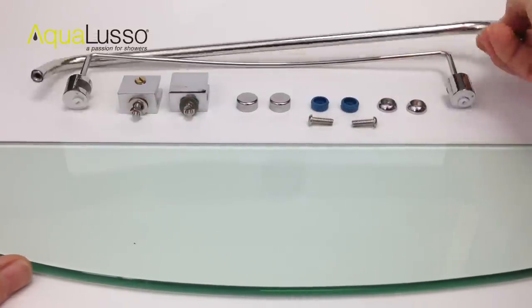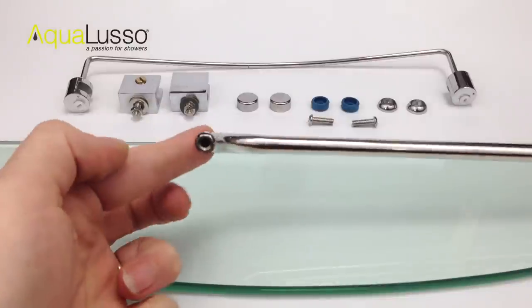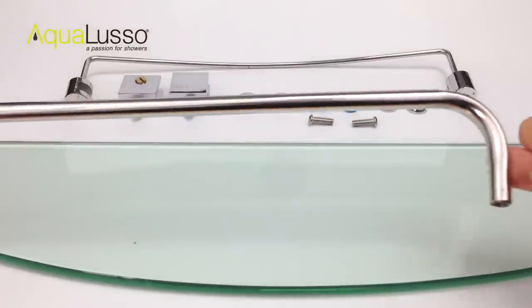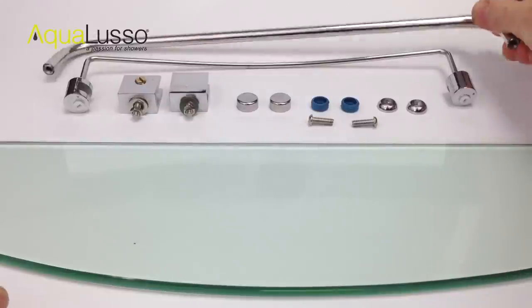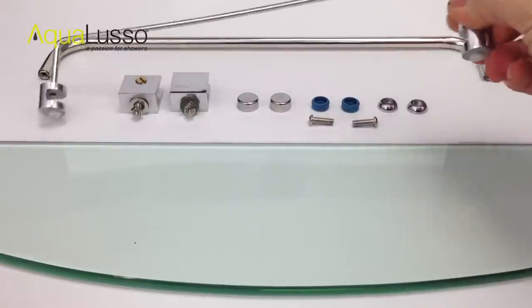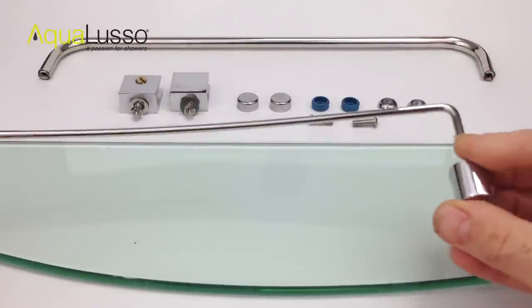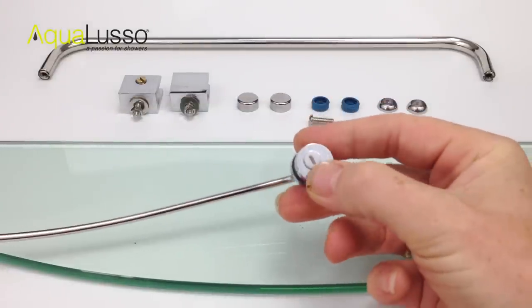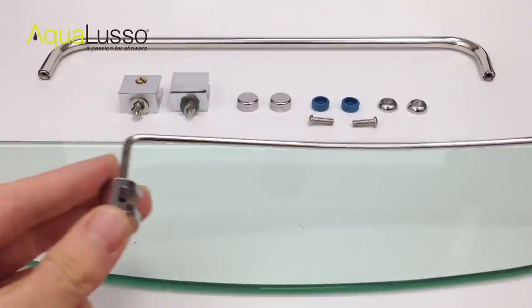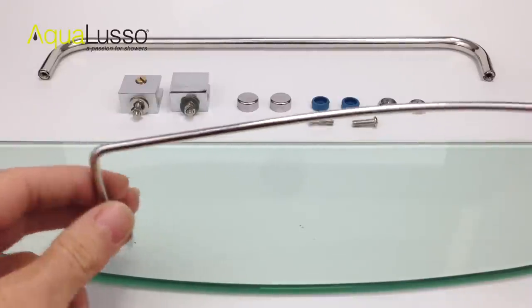A thicker chrome U-shaped bar and a thinner upper rail. It has two little fixing screw points underneath. You can see it's got a curve in it.